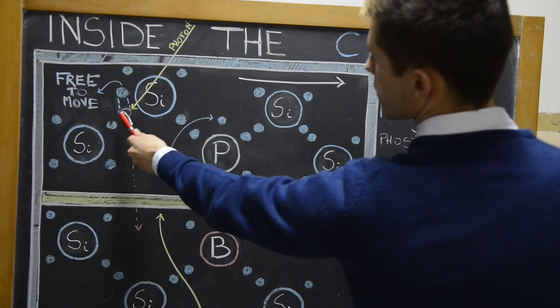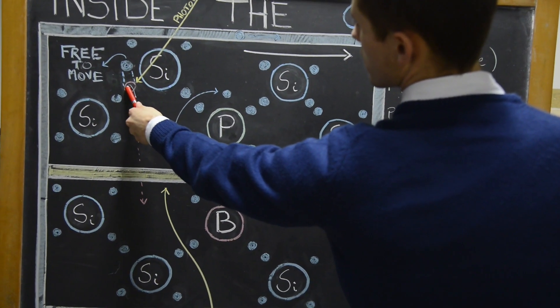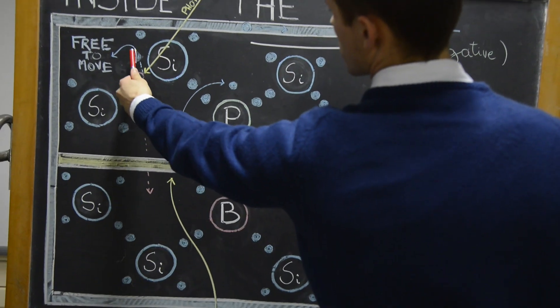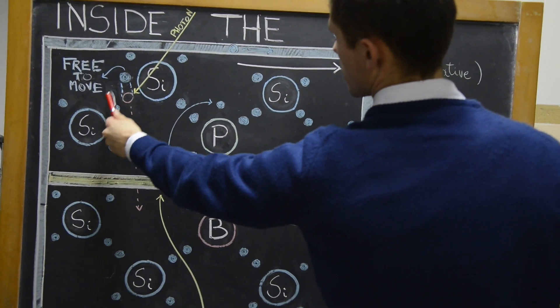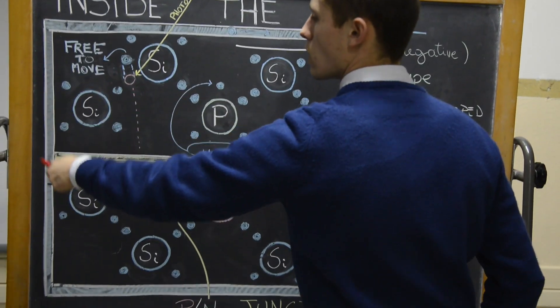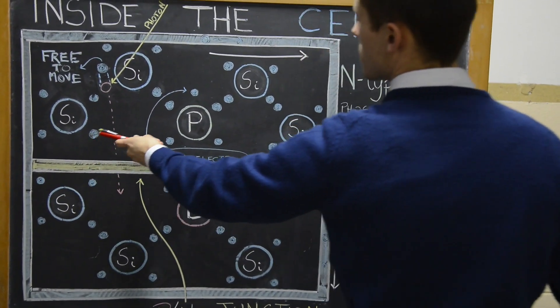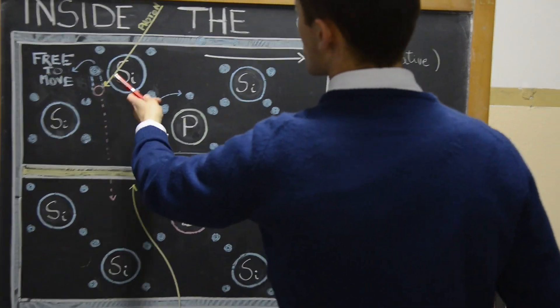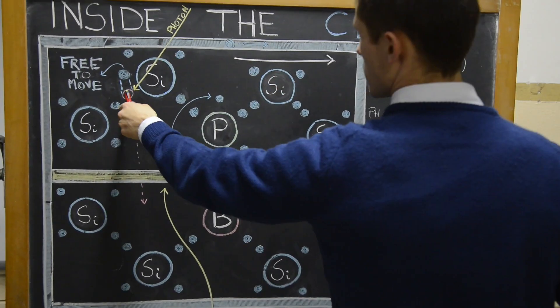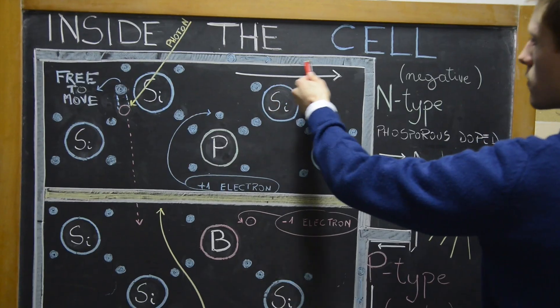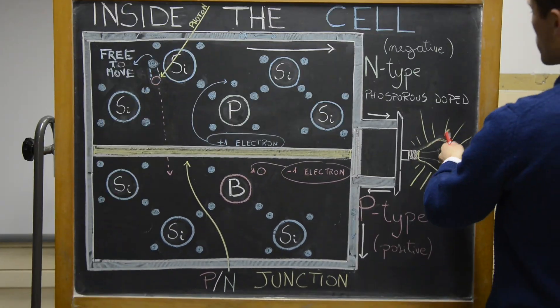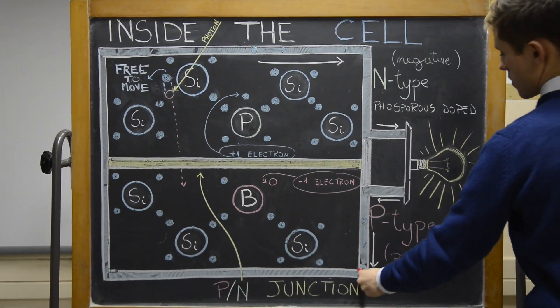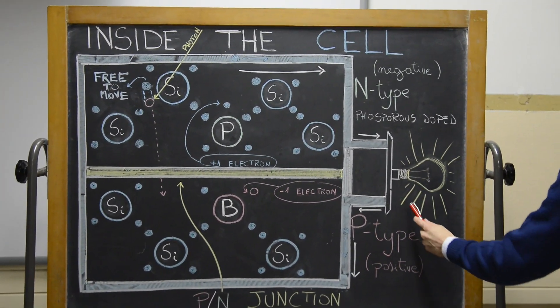When a photon strikes the silicon cell with enough energy, it can knock off an electron from its bond, leaving a hole. The negatively charged electron and the location of the positively charged hole are now free to move, but they only go one way. The electron is drawn to the N-side, while the hole will go to the other side. From there, electrons flow through an external circuit, doing electrical work like powering a light bulb, before returning to the positive side of the cell.